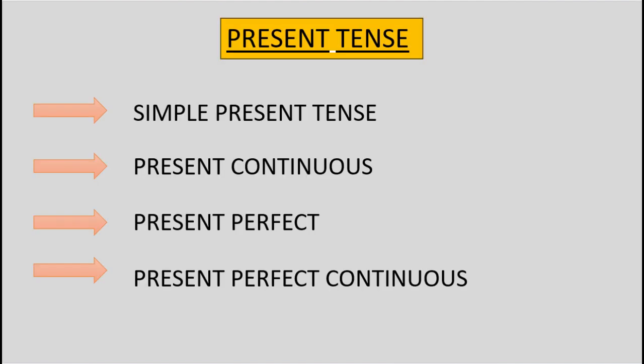Present tense is divided into four types: 1. Simple present tense. 2. Present continuous tense. 3. Present perfect tense. 4. Present perfect continuous tense.